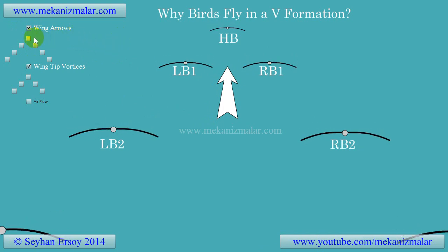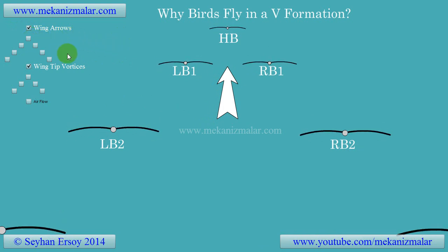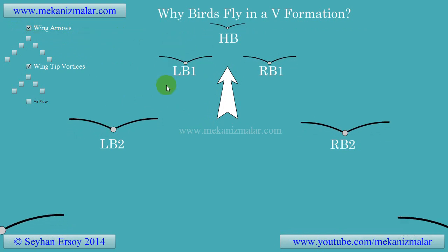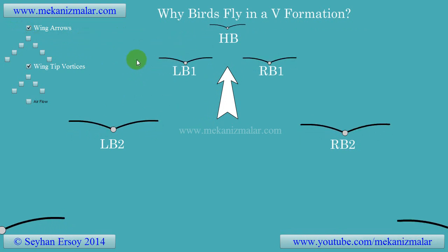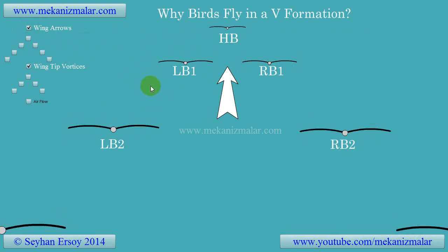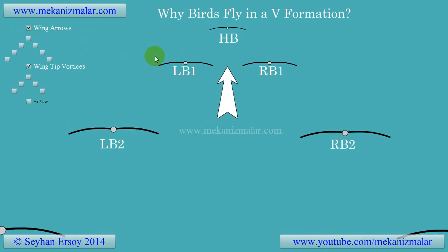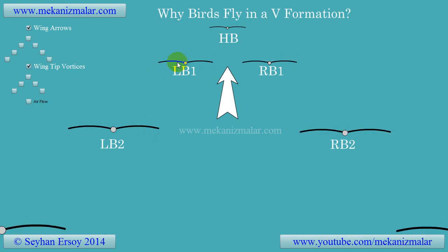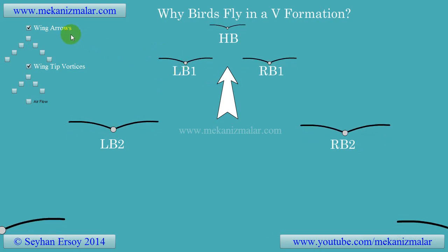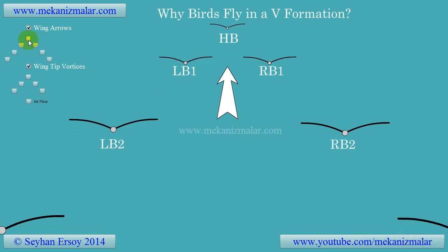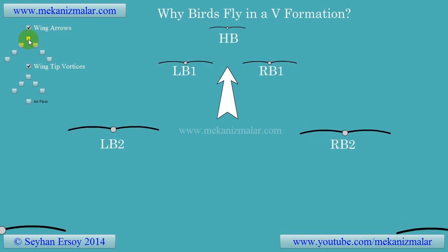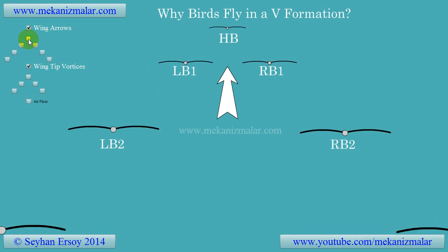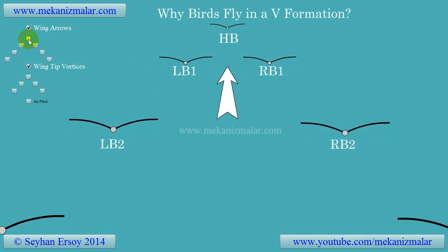When a bird pushes its wings downwards, it creates a strong low pressure region above the wings and high pressure under the wings. It's the strong high pressure under the wings that forces the air to flow toward the low pressure air above the wings.